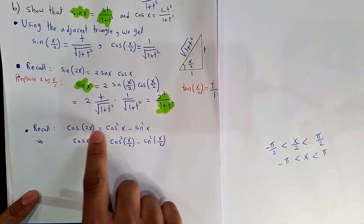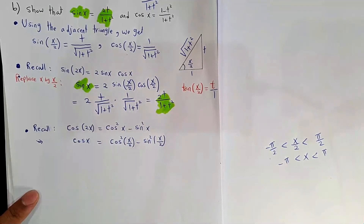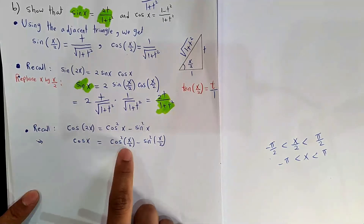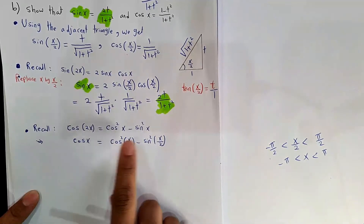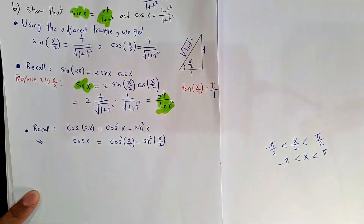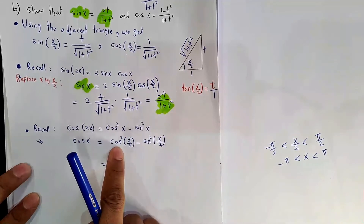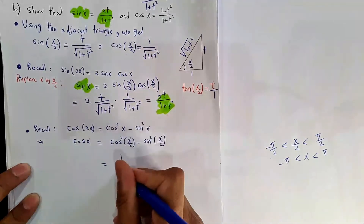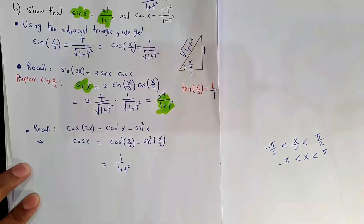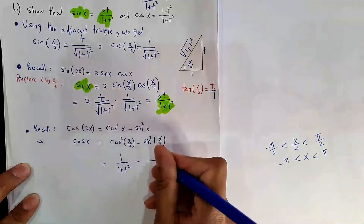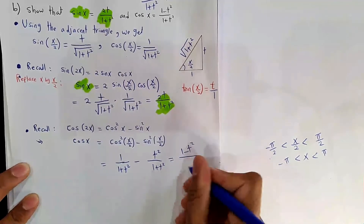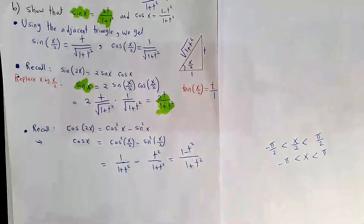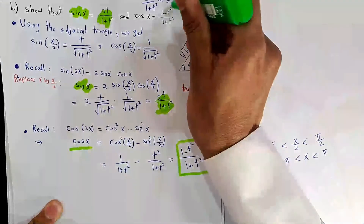For the cosine, recall cos(2θ) = cos²θ − sin²θ. Replacing θ with x/2: cos x = cos²(x/2) − sin²(x/2). Squaring our values: cos²(x/2) = 1/(1+t²) and sin²(x/2) = t²/(1+t²). Subtracting gives cos x = (1−t²)/(1+t²), which confirms the formula.